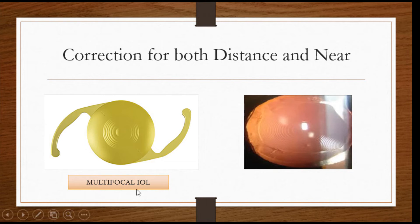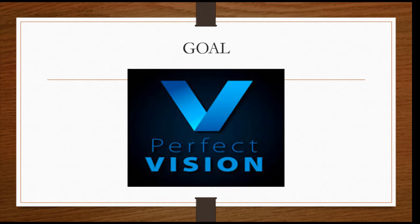Multifocal lenses have concentric circles in the center which help the patient see both for distance and near as the pupil constricts and relaxes. The whole goal is giving perfect vision with as little dependence on glasses as possible.